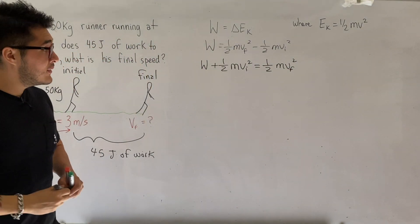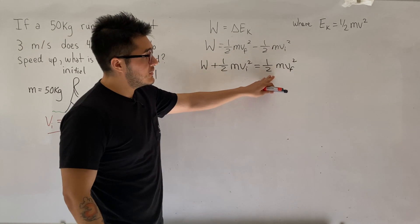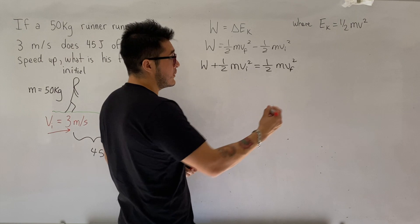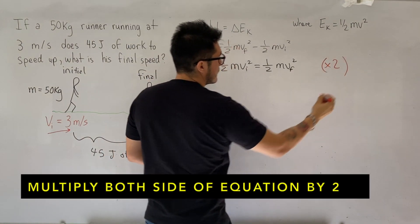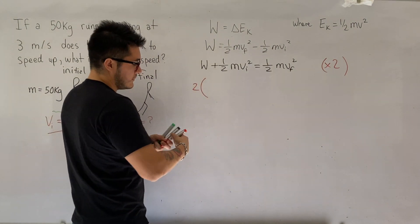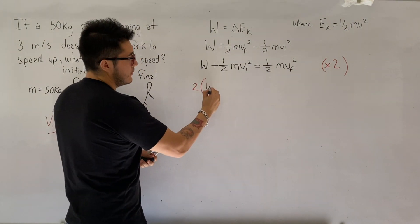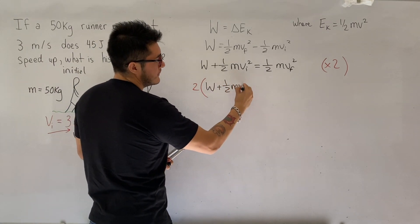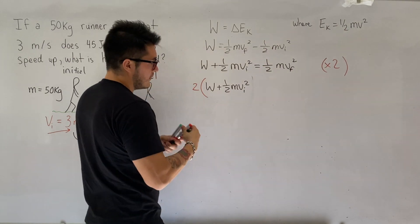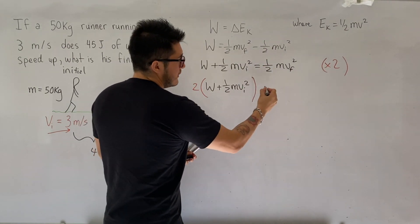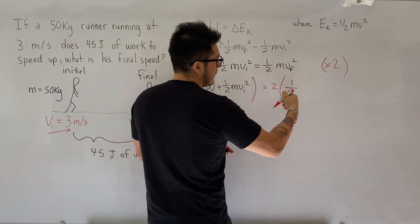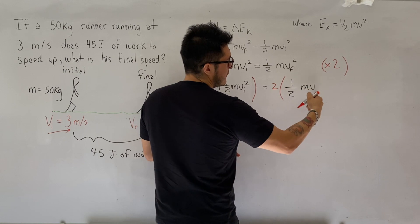Our goal is to isolate for v final, so we need to get rid of these coefficients, 1/2 m. So the first thing we can do, we can multiply both sides of the equation by 2. So that would be 2 times work plus 1/2 mv initial squared, which equals to 2 times 1/2 mv final squared.